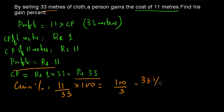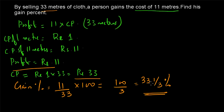This question and the previous question are very important — understand them thoroughly. They are very confusing and can appear in objective-type competitive exam questions. To summarize: when the gain is the selling price of 11 meters, it is direct — 33 SP and 11 SP, find cost price and gain percentage easily. When it is the cost of 11 meters, find the corresponding cost price for 33 meters and the corresponding profit, then calculate gain percentage.